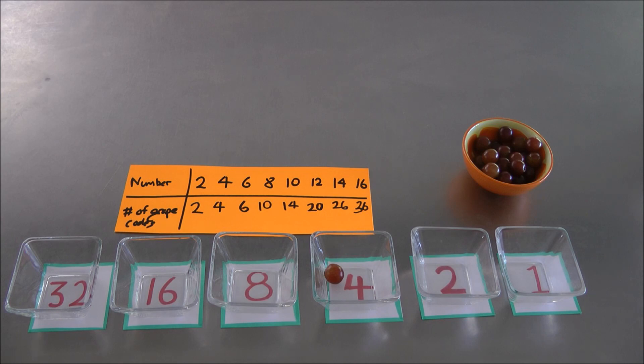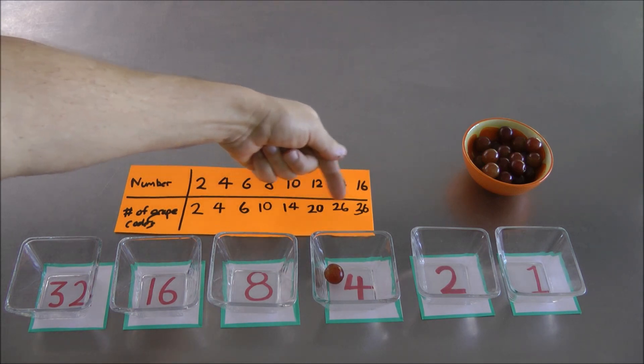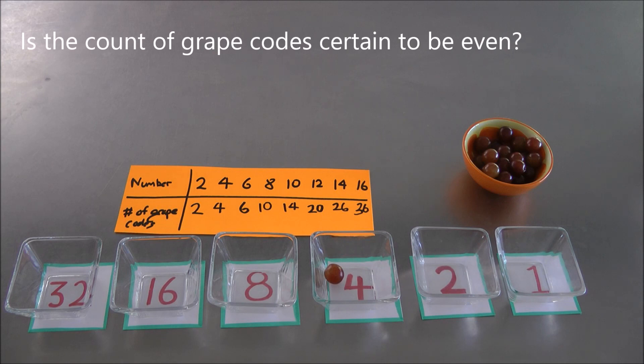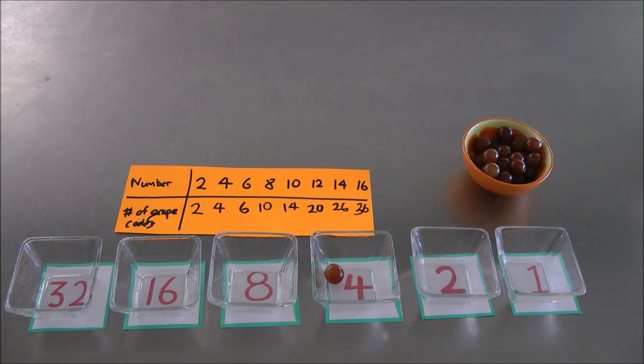So things to observe. I'm noticing right away that the count, all these counts, the number of grape codes for different numbers, always seems to be even. Is that true? Is there always an even number of counts of grape codes for each number? Well, that won't help me predict what the next numbers are, but I can at least say they're even if I believe that's true. Maybe it's not true. What else can I say?